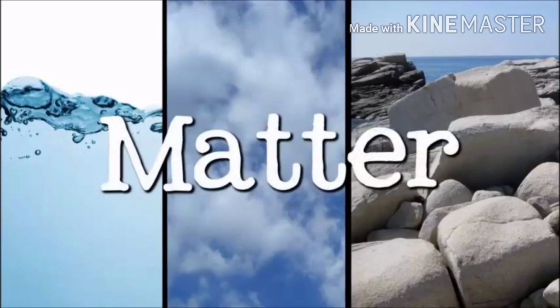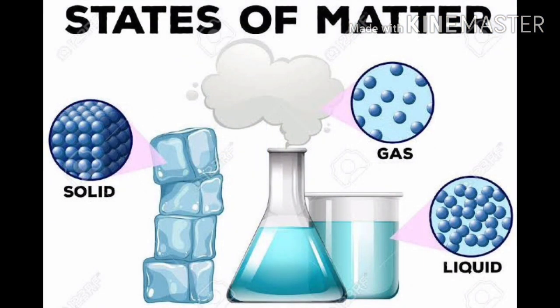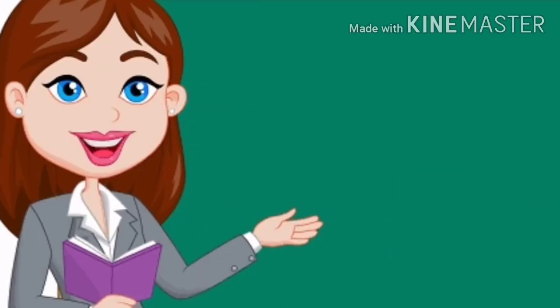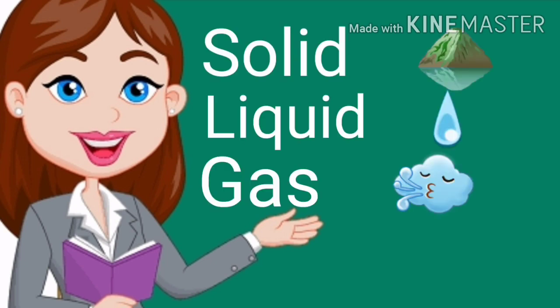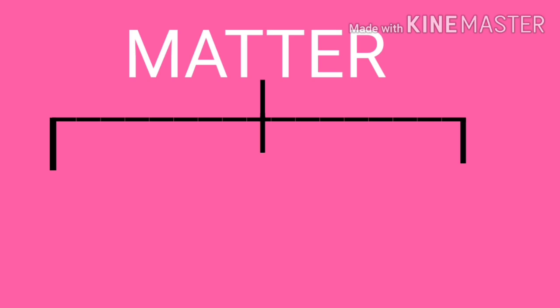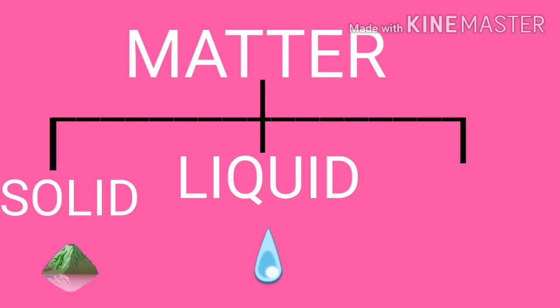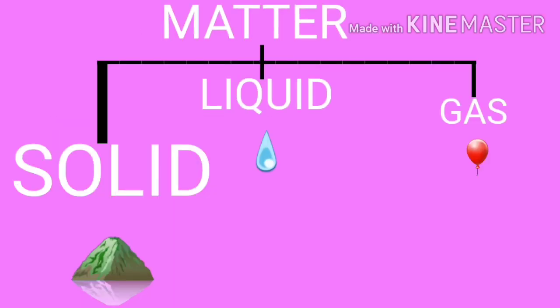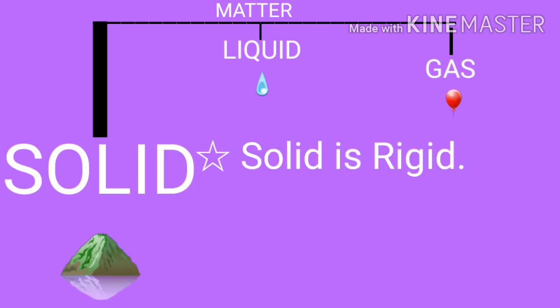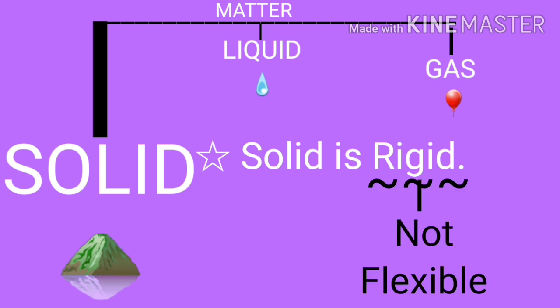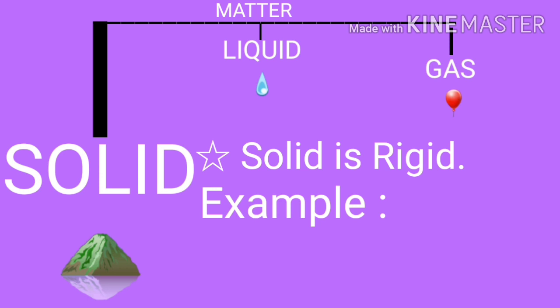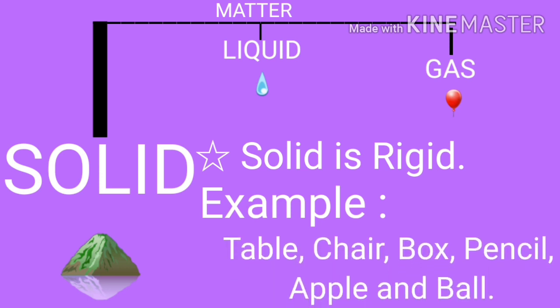Matter exists in three states. They are solid, liquid and gas. Children, repeat after me: solid, liquid and gas. Matter can exist as solid, liquid and gas. First, solid is rigid. Rigid means not flexible. For example, table, chair, box, pencil, apple and ball are some examples of solid.